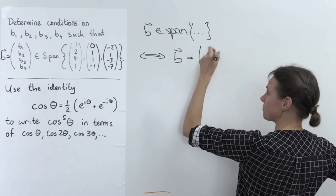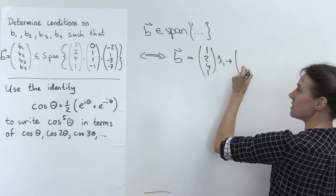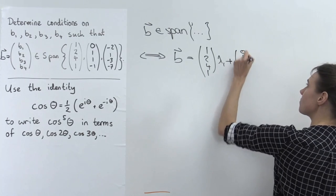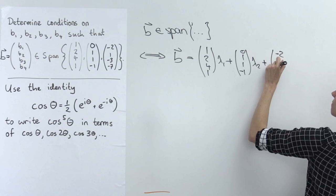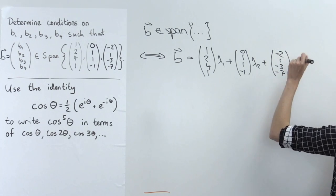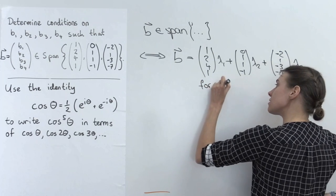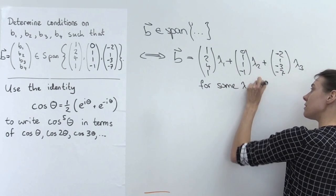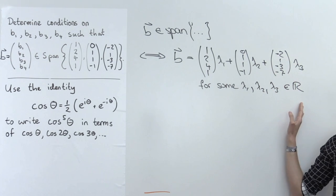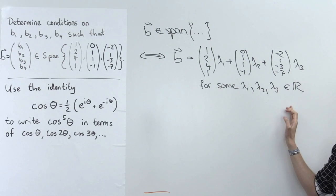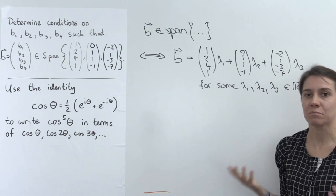b is in the span if b equals the first vector times lambda_1, plus the second vector times lambda_2, plus the third vector times lambda_3 — that's just the definition of span. So b is in the span if this equation holds for some lambdas λ1, λ2, λ3 in ℝ. We need to solve this system and see if we can get a solution. If we get a solution, b is in the span; if not, it isn't.